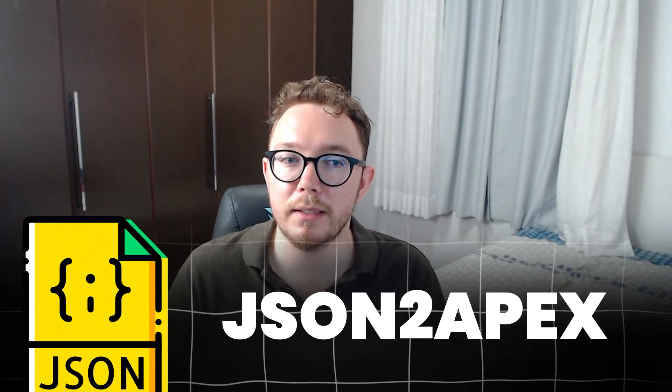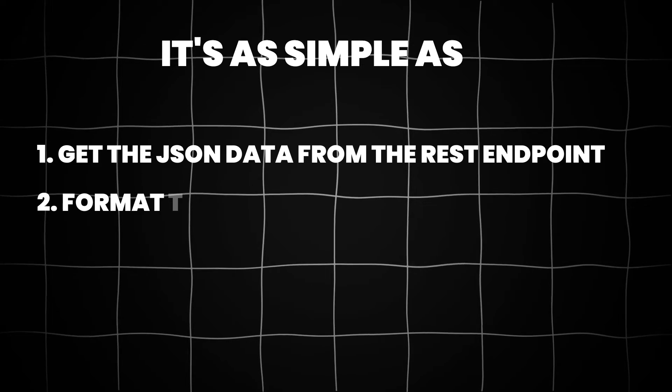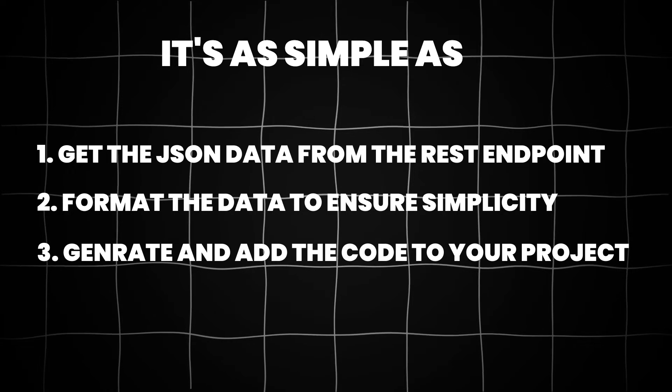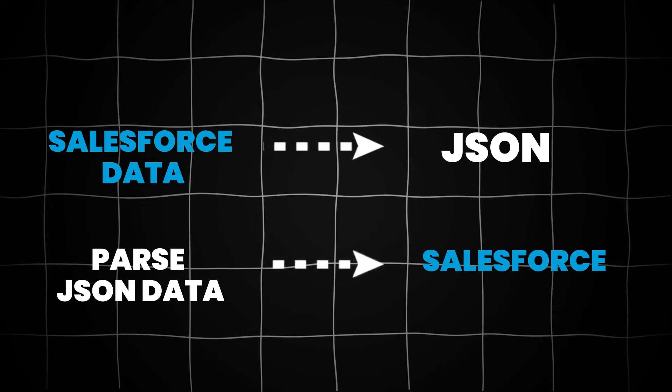Another tool that speeds up integration development is JSON to Apex. This is a quick way of taking JSON data and turning it into an Apex class. It is as simple as getting the JSON data from the REST endpoint, formatting the data to ensure simplicity, and generating and adding the code to your project. It is a quick way of generating the necessary boilerplate Apex code. This way, I can turn Salesforce data into JSON or parse JSON data and write it to Salesforce. It also has the added benefit of generating test classes, allowing me to use the JSON string data and add it as a response for my mock callouts.